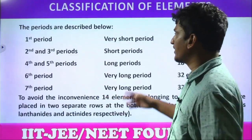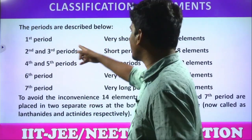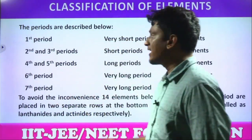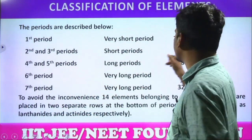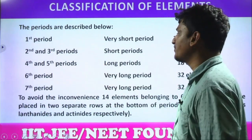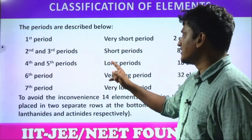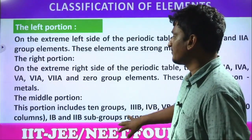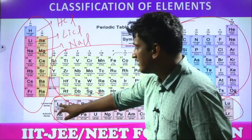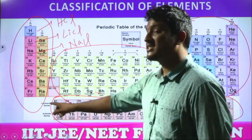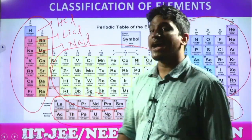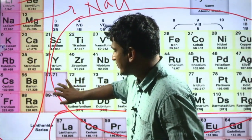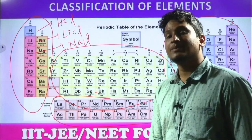Let us see how many elements are in each period. The first period is called a very short period — only two elements: hydrogen and helium. Second and third periods are called short periods — eight elements each. Fourth and fifth periods are called long periods — eighteen elements each. Sixth and seventh periods are called very long periods — thirty-two elements each.